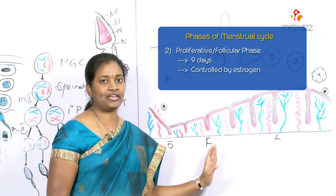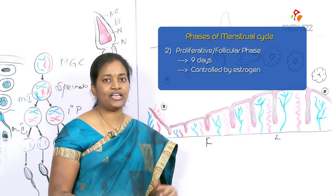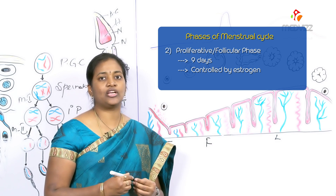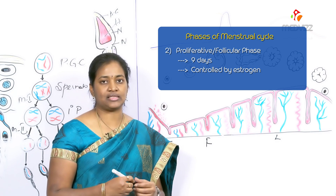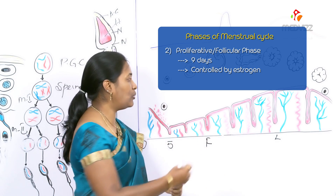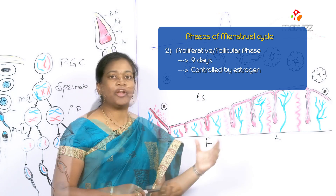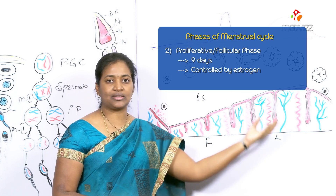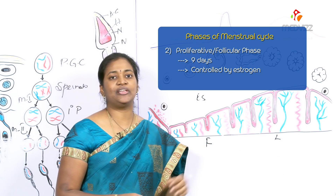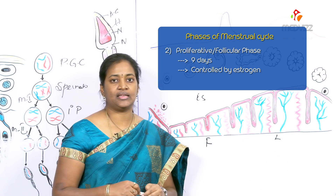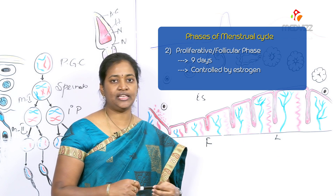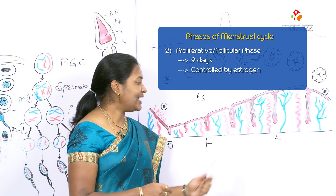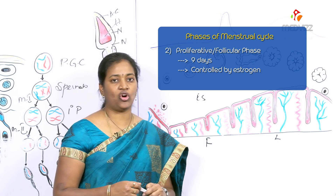The proliferative or follicular phase lasts approximately nine days and coincides with the growth of ovarian follicles. This phase is basically dependent on the hormone estrogen. During this phase, the wall of the endometrium becomes two to three times its size, typically reaching three to five millimeters. The surface epithelium reforms and covers the endometrium, the glands increase in size, and the blood vessels elongate and become spiral.